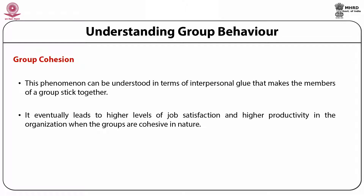If a group is more cohesive, it has been shown to be highly productive and vice versa. The relationship of cohesiveness and productivity depends on the performance-related norms established by the group. If performance-related norms are high, a cohesive group will be more productive; if cohesiveness is high and performance norms are low, productivity will be low. So if group cohesiveness is low, how can it be enhanced? To increase the productivity of the group, group cohesiveness is absolutely necessary.